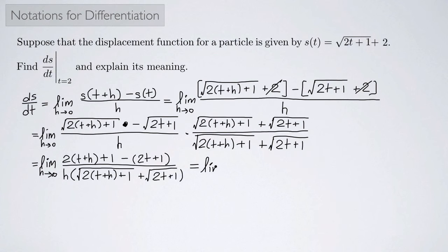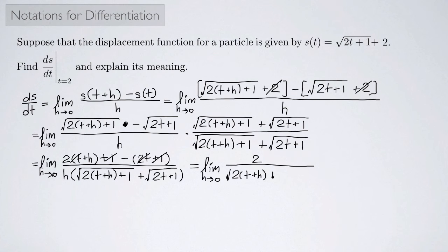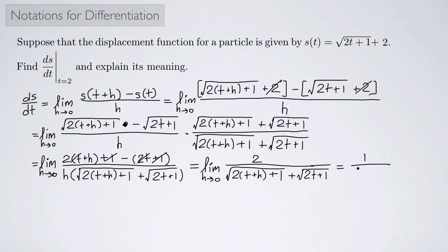So I have the limit as h approaches 0 of 2 divided by the square root of 2t plus 2h plus 1 plus the square root of 2t plus 1. Now I can actually take the limit and let h go to 0. When h goes to 0, the denominator becomes the square root of 2t plus 1 plus the square root of 2t plus 1, which is 2 times the square root of 2t plus 1. That 2 cancels with the 2 on top, so ds/dt equals 1 over the square root of 2t plus 1.